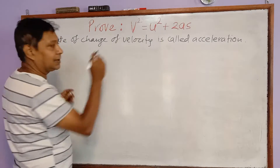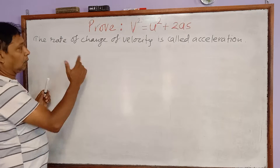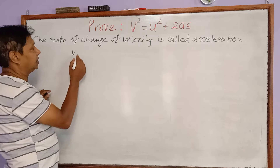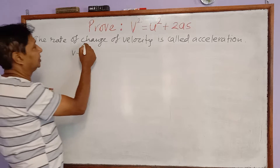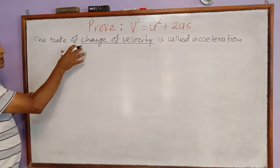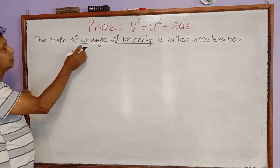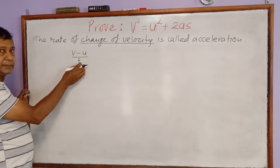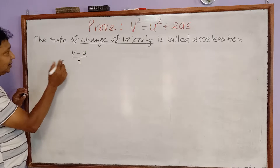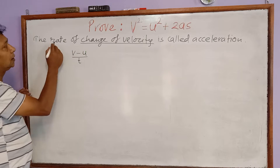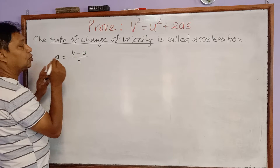What is the meaning of change of velocity? If a body is moving such that every second its velocity is increasing or decreasing, then the final velocity is denoted by V and the initial velocity is denoted by u. V minus u gives the change of velocity. If the change of velocity is divided by the time taken to gain that change, it gives the rate of change of velocity, which is defined as acceleration. So acceleration equals V minus u divided by T.